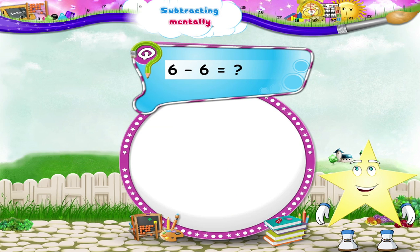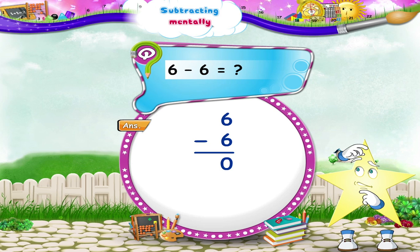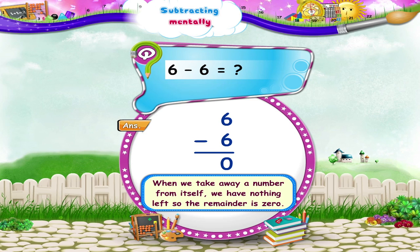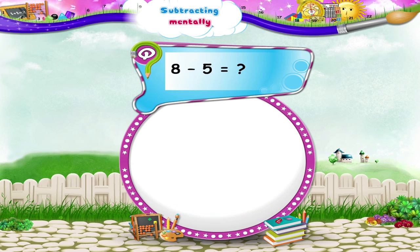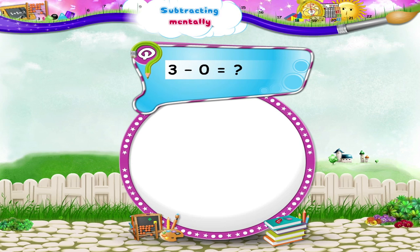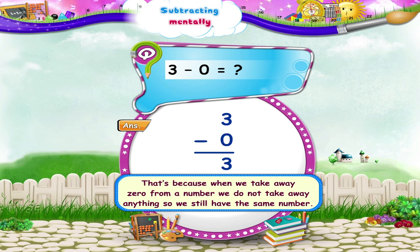And 6 minus 6 is... 0. Starry, do you know why? When we take away a number from itself, we have nothing left. So the remainder is 0. So what about 8 minus 5? 8 minus 5 is equal to 3. And 3 minus 0 is 3. That's because when we take away 0 from a number, we do not take away anything, so we still have the same number.